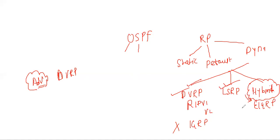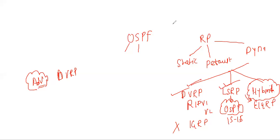In link state routing protocol (LSRP), OSPF is a protocol which comes under LSRP, as well as the ISIS protocol. Our topic today is OSPF, so we will discuss OSPF and its features. First of all, OSPF is a link state routing protocol.